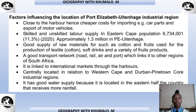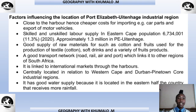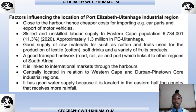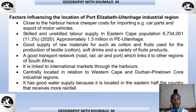Factors influencing the location of the Port Elizabeth Winterhaven industrial region: it is close to the harbor, resulting in cheaper costs for importing car parts and exporting motor vehicles. Skilled and unskilled labor supply — the Eastern Cape population is approximately 6.7 million, with about 1.3 million in the Port Elizabeth Winterhaven area. There is a good supply of raw materials such as cotton and fruit for textile and food production, and a good transport network — rail, road, air, and port — linking it to other regions and international markets.